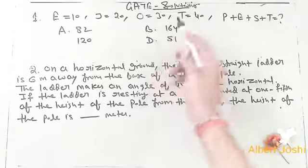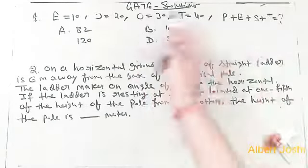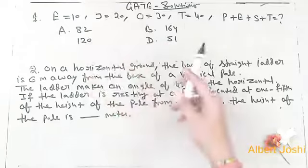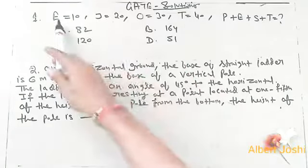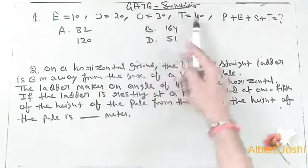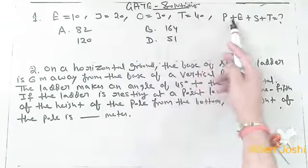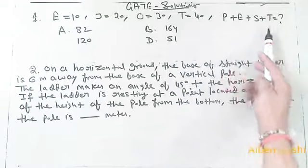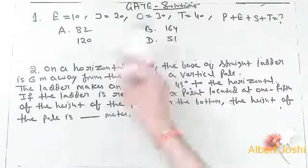Friends, today we have collected aptitude questions from GATE. The first one asks: if E equals 10, J equals 20, O equals 30, T equals 40, then what is P plus E plus S plus T?